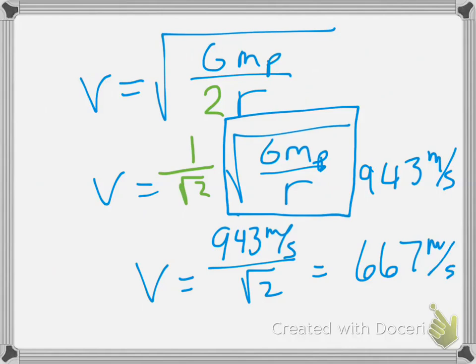So we noticed what we did there. All we did was looked at what we changed in our equation. That change was just the square root of 2, and we realized that everything else remained the same, and we had already calculated that. And that square root of 2 is on the bottom because radius is on the bottom.